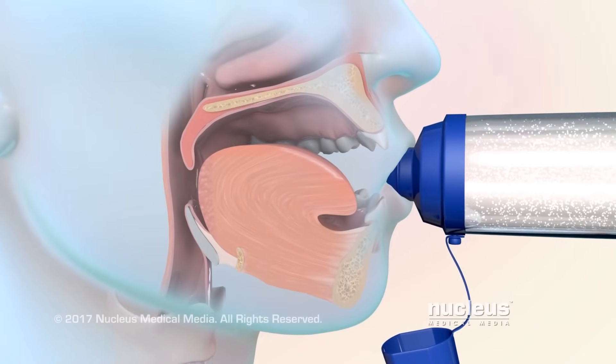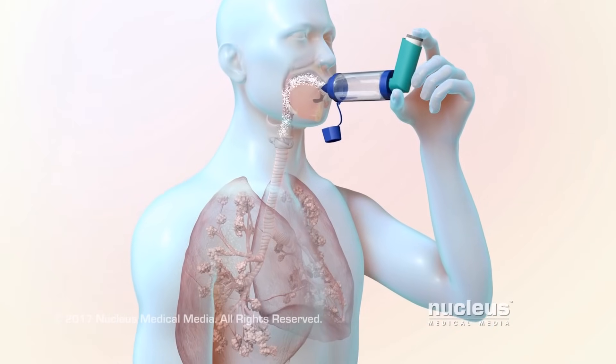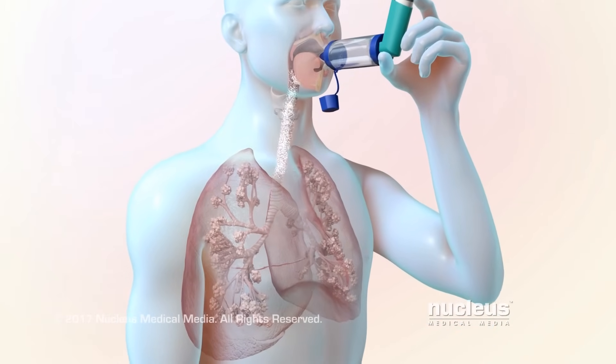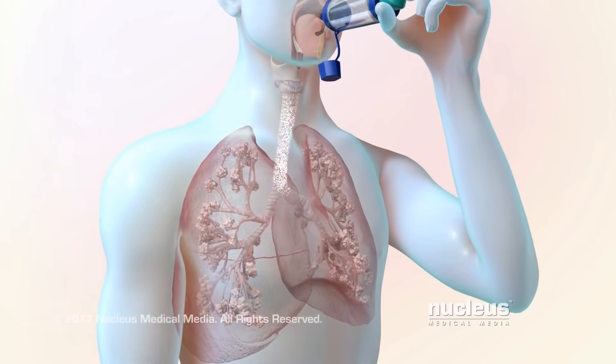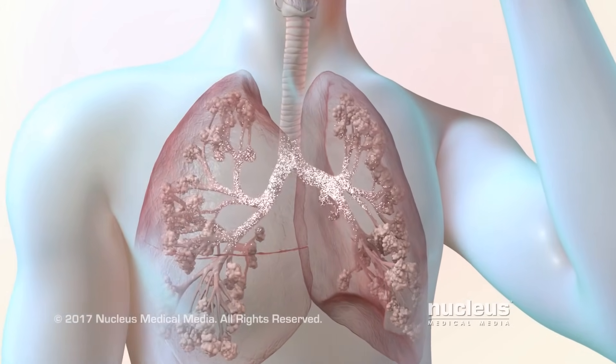A metered dose inhaler sprays medicine through your mouth so that it can reach your airways. If your inhaler is not used the right way, some medicine may remain in the back of your mouth and not reach your airways where it is needed.